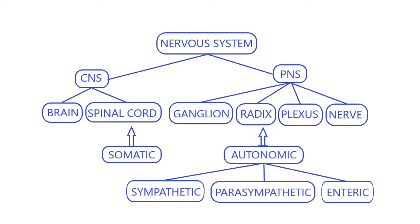In the previous videos, the features of the nervous tissue, which is the basis of the nervous system structure, were described. The structure of different parts of the nervous system will be considered in the next videos.